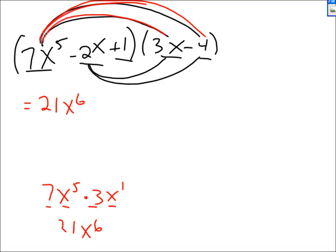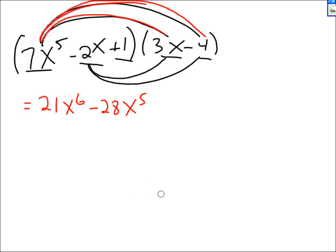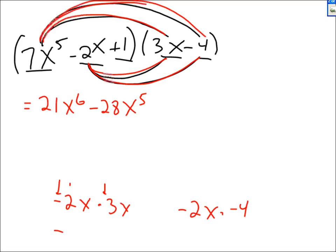Now 7x to the 5th times negative 4: positive times negative is negative, 7 times 4 is 28, so minus 28x to the 5th. Now I distribute the negative 2x: negative 2x times 3x — negative 2 times 3 is negative 6, x times x is x squared — so minus 6x squared.